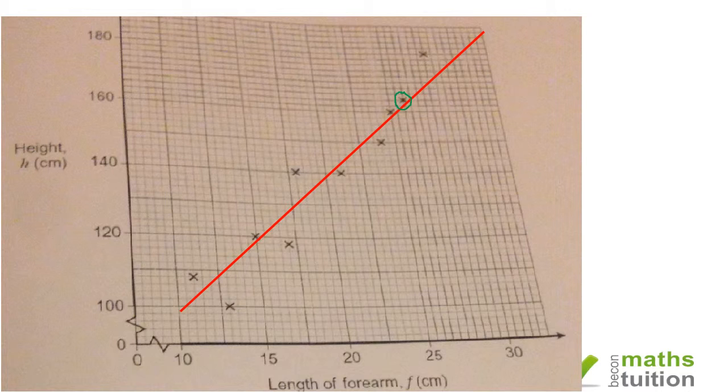For this question we're trying to predict the length of the forearm of a person who has a height of 145 centimeters. The two lines intersect, the line of best fit and the line parallel to the horizontal axis from the point 145, and both lines meet at this point here.